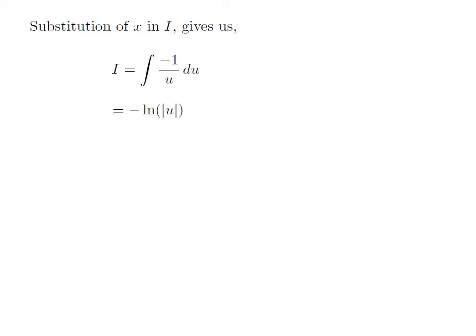As the integration of 1 divided by u with respect to u is the natural log of the absolute value of u, so i is equal to minus the natural log of the absolute value of u. To know the details of how to get the integration of 1 divided by u, please click on the card appearing in the right corner of the video. The address of the video is also given in the description.